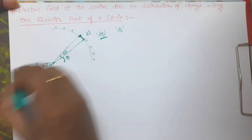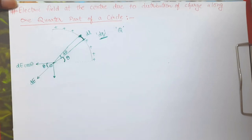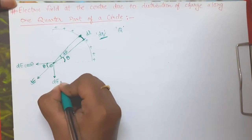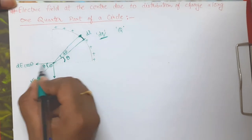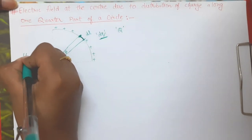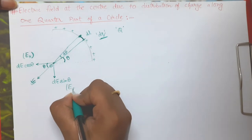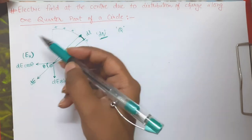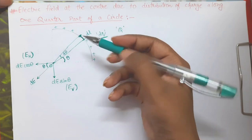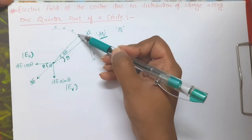If this angle is theta, then this angle is also going to be theta because these are vertically opposite angles. So along theta there will be a component of dE·cosθ, and at 90 degrees from it there will be a component of dE·sinθ. The component along the horizontal direction I am going to designate as Eh, and the vertical component as Ev. Just like this one, there will be many lengths dl.